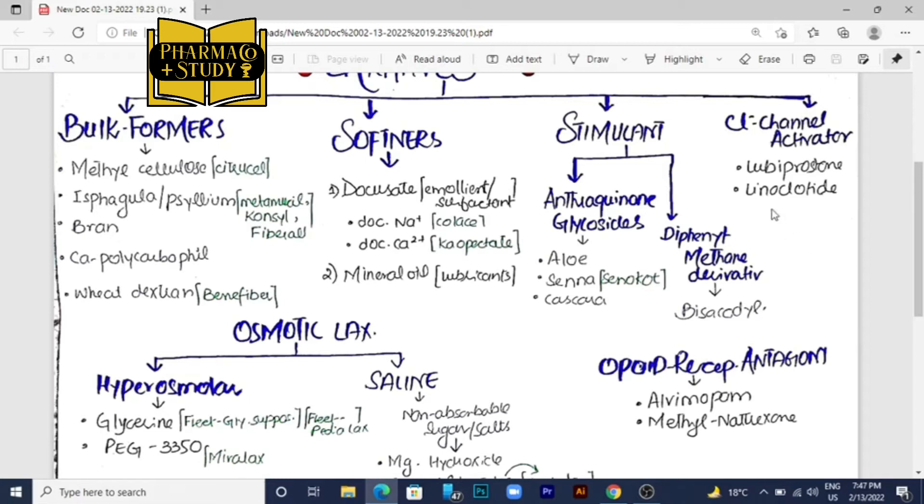There are two drugs: lubiprostone and linoclotide. Lubiprostone, focus on this name, has prostone in it. I will discuss more things about this word and which category it belongs to. If you have guessed this category, mention in the comment.